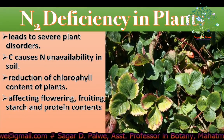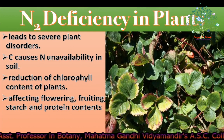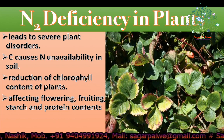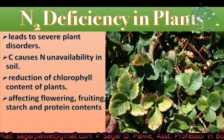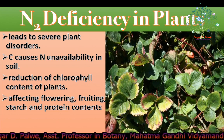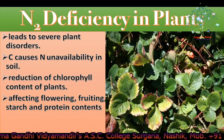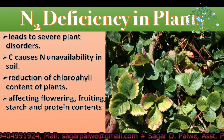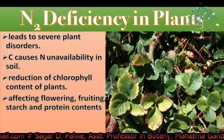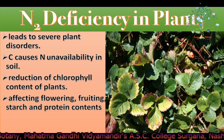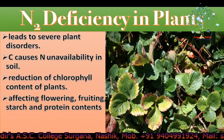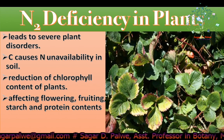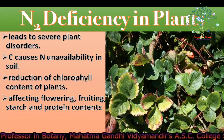Nitrogen deficiency in plants occurs when there is an insufficient supply of nitrogen, regardless of its abundance in the atmosphere, and leads to severe plant disorders. Nitrogen deficiency is likely to occur when other minerals like carbon are added to the soil, directly leading to unavailability of nitrogen to the plants, because a lot of nitrogen will be used by soil organisms to break down harmful carbon sources. This translates to reduction of chlorophyll content, therefore affecting flowering, fruiting, starch and protein contents, undermining plant health.